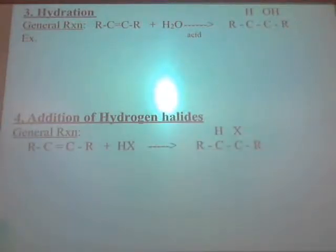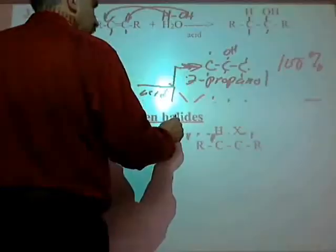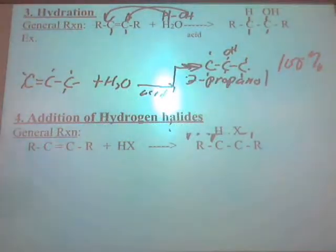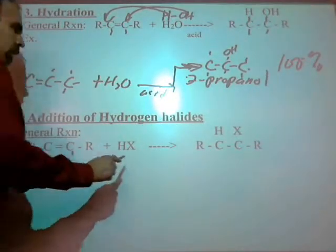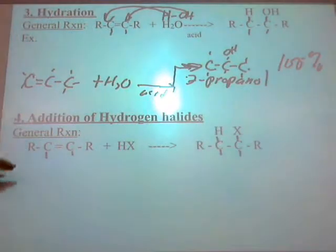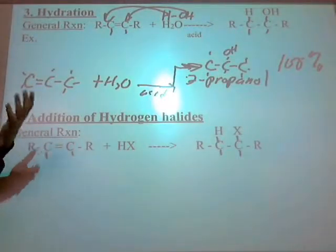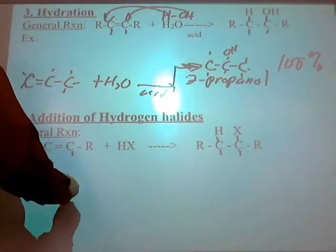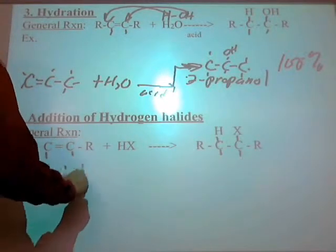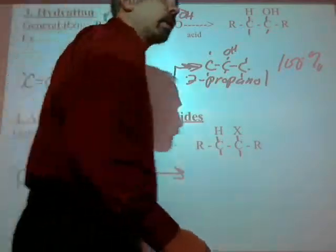This is addition of hydrogen halides. If you look at your notes, you already have a general formula. Notice the similarity between this reaction and the hydration above. You take HX - and X stands for any halogen, chlorine, bromine, etc. - and react it with an alkene. Let's take an example: 1-butene plus HBr.